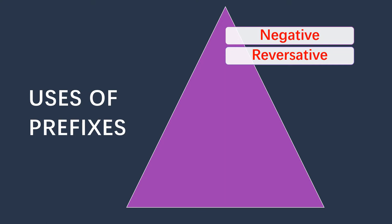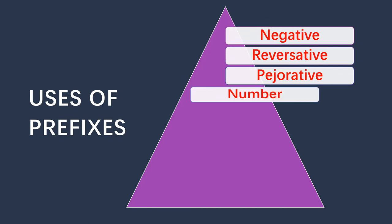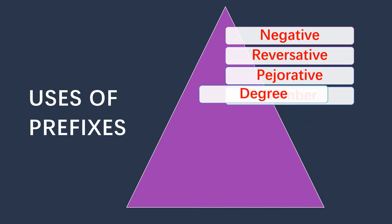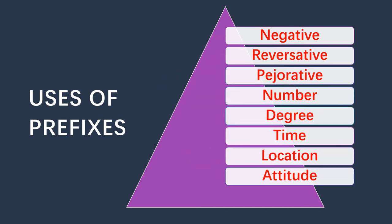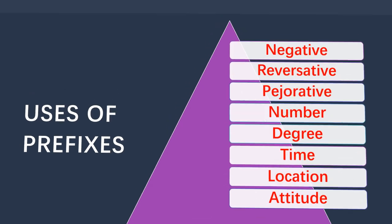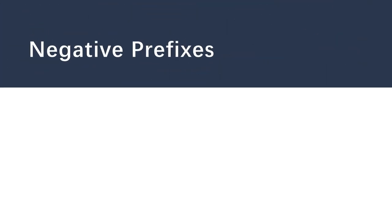We will also get a pejorative meaning of a word, which means a disapproval meaning. We will explain each of these meanings in detail in coming classes. Additionally, we can get meanings of number, degree, time, location, and attitude by adding prefixes to words. In today's class we will focus on the negative meaning that a prefix brings.